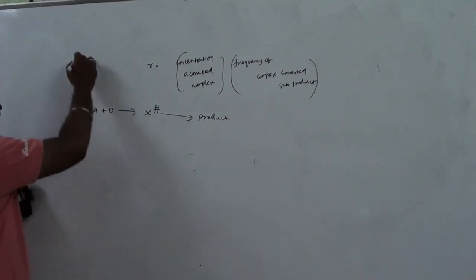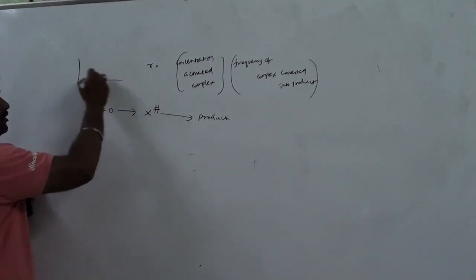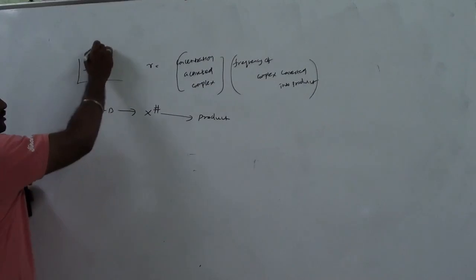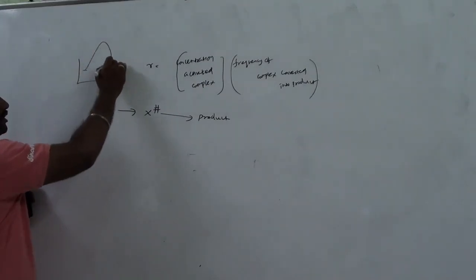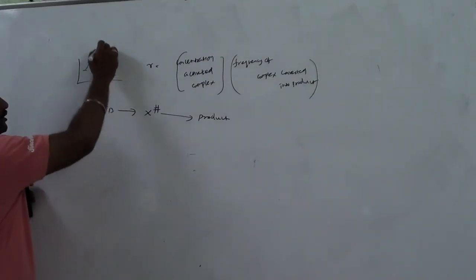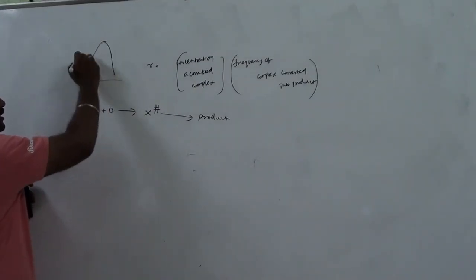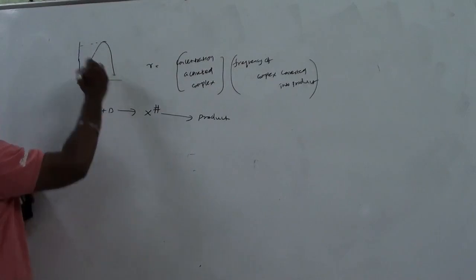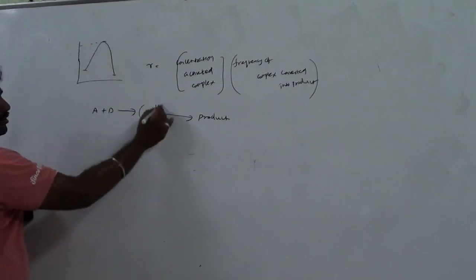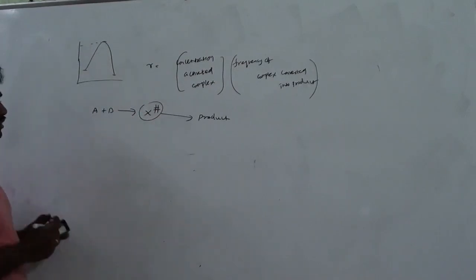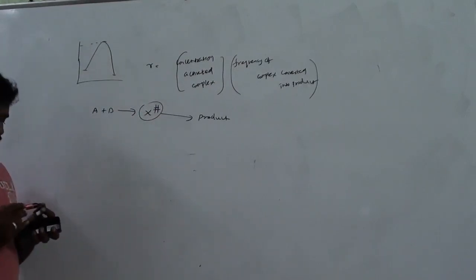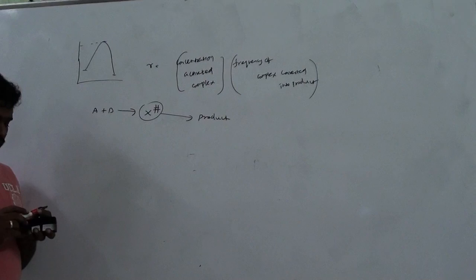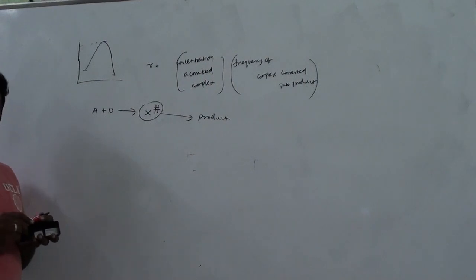First, what is forming? A transition state. Then it is converted into product. It has a transition state. The hash symbol used in the corner denotes the transition state. It is not an intermediate — it is written as X‡.